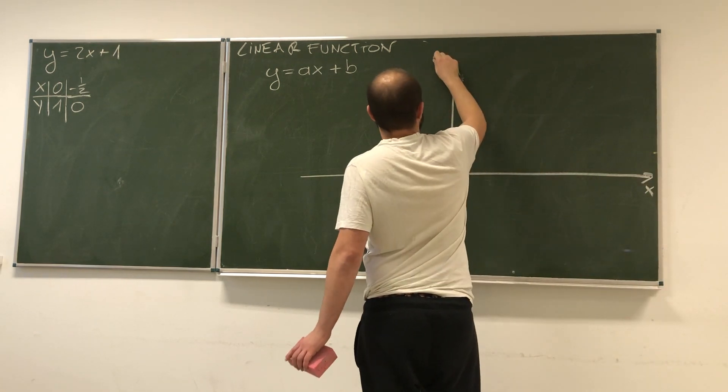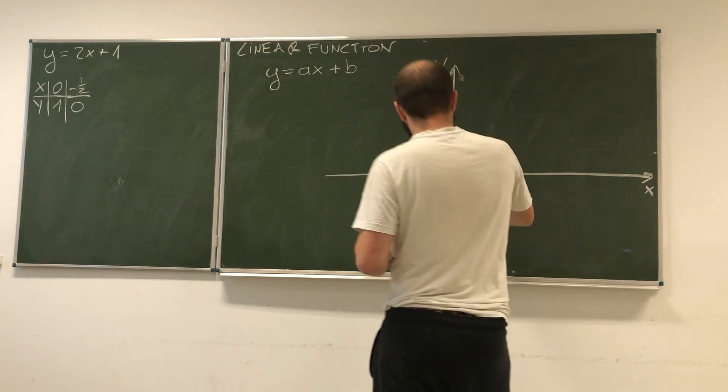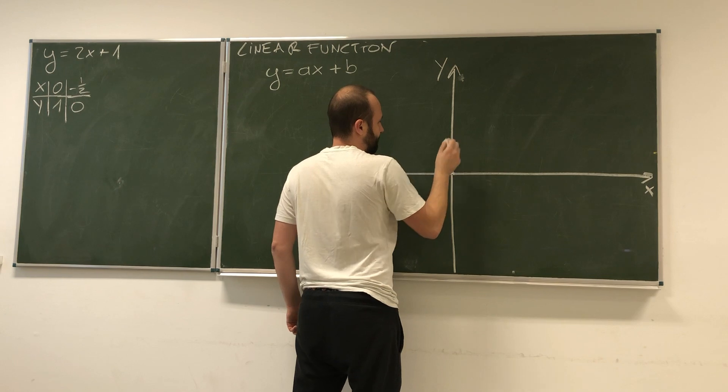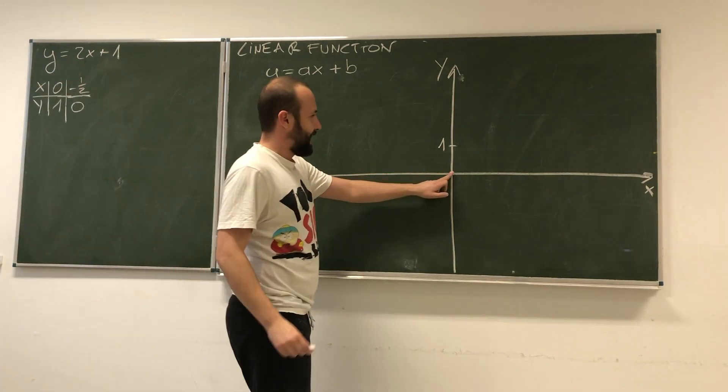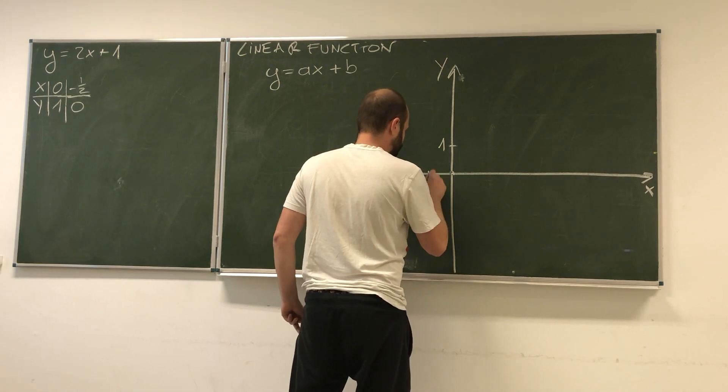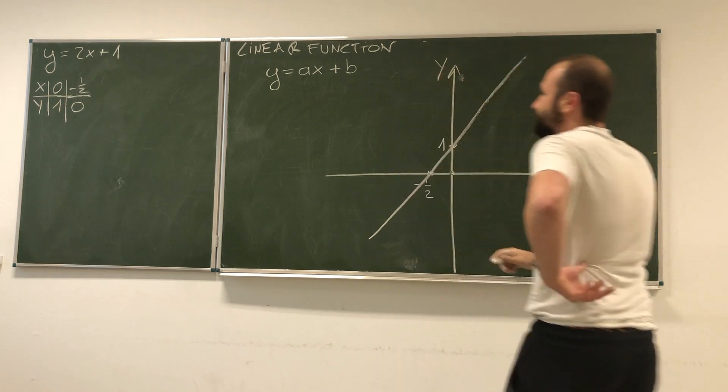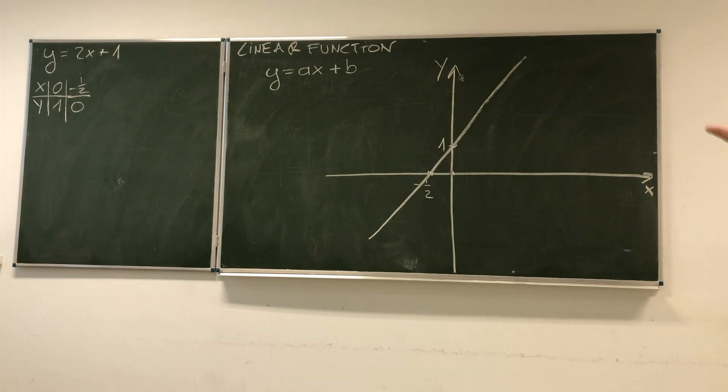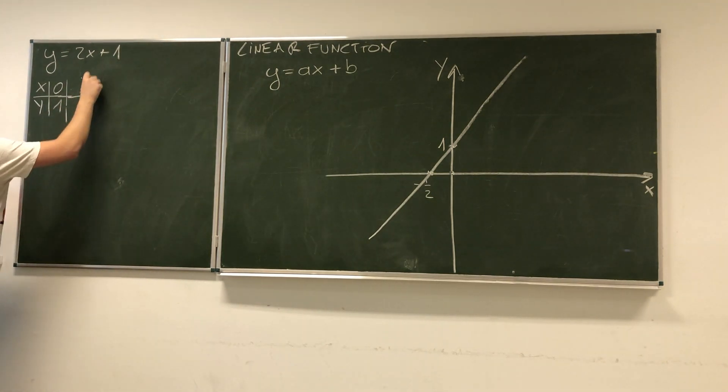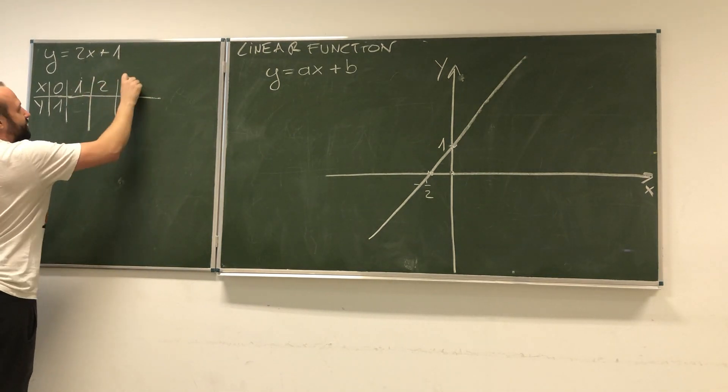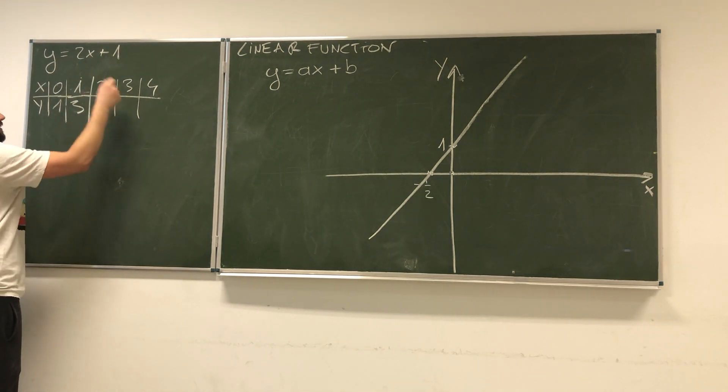Here is x, here is y. If x equals 0, y equals 1. When y equals 0, x equals negative 1 over 2. The only thing we've got to do is draw a straight line through these two points, and we've got a linear function. If I substitute more values of x—1, 2, 3, 4—I can read the values of y. If x is 1, y is 3, then 5, then 7, then 9.